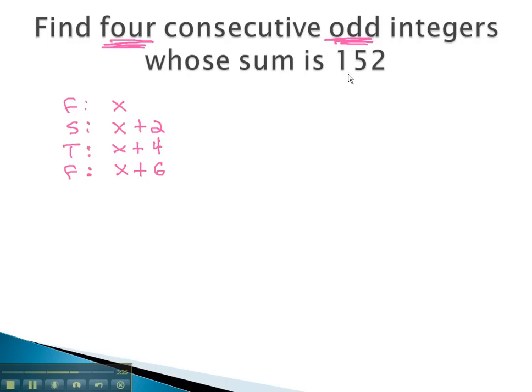Now that they're labeled, we know their sum is 152. We combine like terms to find 4x plus 12 equals 152.